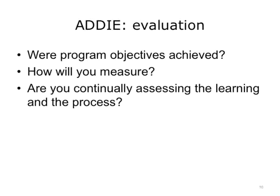The final stage of a training cycle is evaluation. The evaluation phase consists of two parts: formative and summative. Formative evaluation is present in each stage of the ADDIE process to make sure you're staying on the original plan. The summative evaluation consists of tests of the learning objectives and providing opportunities to gather feedback from the learners.